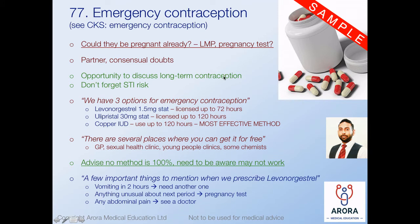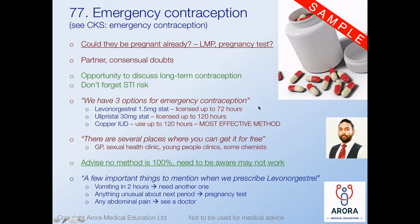Moving on to emergency contraception. If someone comes asking for the emergency pill, first consider whether they could already be pregnant - ask about last menstrual period, whether they've done a pregnancy test, and if there's a delayed period, consider doing one first. Think about partner history and check for any doubts about consensuality. This is also an opportunity to discuss long-term contraception going forward. And don't forget the common triad: emergency contraception, checking they're not already pregnant, and STI risk - these three always go together.